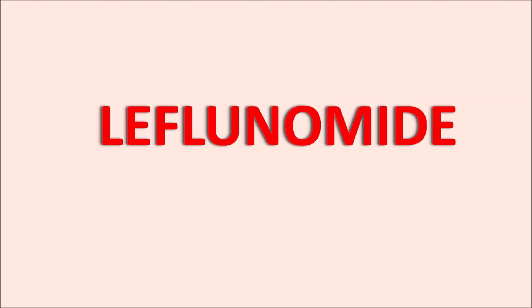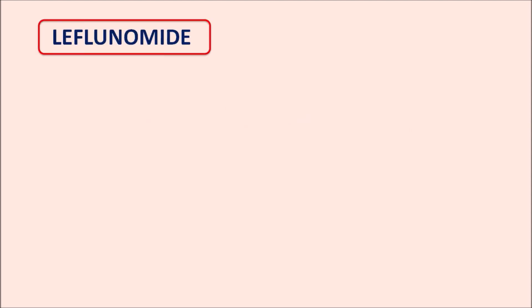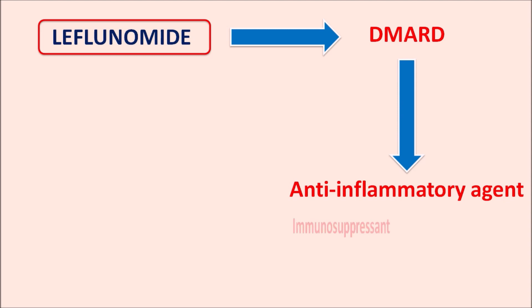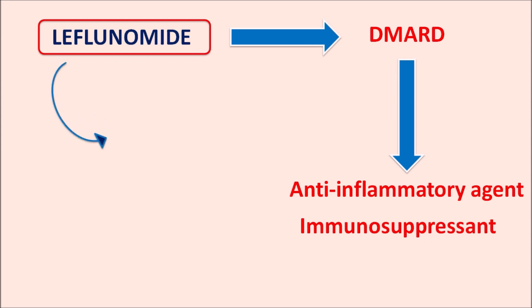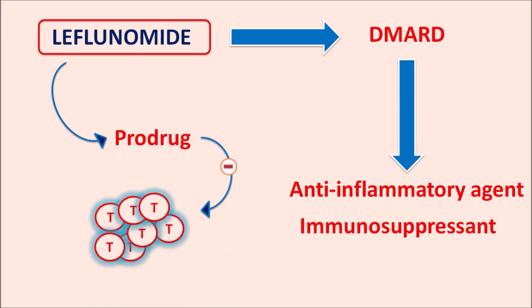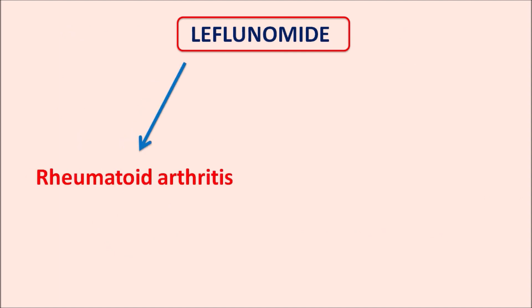Today in this video we are going to discuss leflunomide. This drug belongs to the group of disease-modifying anti-rheumatic drugs (DMARDs). Since leflunomide acts as an anti-inflammatory agent as well as an immunosuppressant, it is categorized under DMARD agents. Leflunomide is a prodrug which is activated after administration and inhibits T-cell activity, thereby controlling immune response as well as inflammatory response. Leflunomide is useful in the treatment of rheumatoid arthritis and is also approved for psoriatic arthritis.